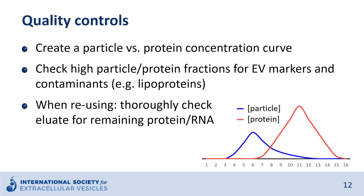When testing or optimizing a SEC protocol, it is advisable to first make an elution curve of the number of particles and the protein concentration in each fraction. The number of particles can, for example, be measured using a single particle tracking method, which is explained in a different video. Since most of these technologies cannot differentiate between EVs and other particles of the same size, the fractions with the highest particle-to-protein ratio should then be tested for the presence of EV proteins and absence of potential contaminants.